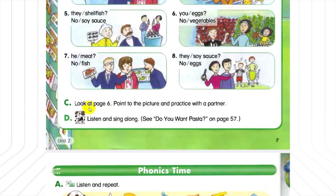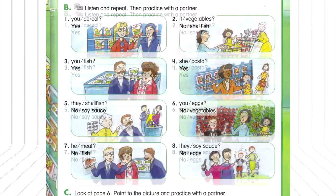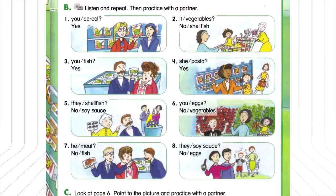D. Listen and sing along. Do you want pasta? Yes, I do. Do you want soy sauce? No, I don't. I want eggs. Does he want vegetables? Yes, he does. Does he want cereal? No, he doesn't. He wants eggs. Do they want fish and meat? Yes, they do. Do they want shellfish? No, they don't. They want eggs.